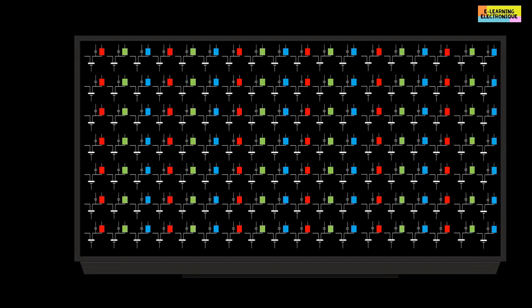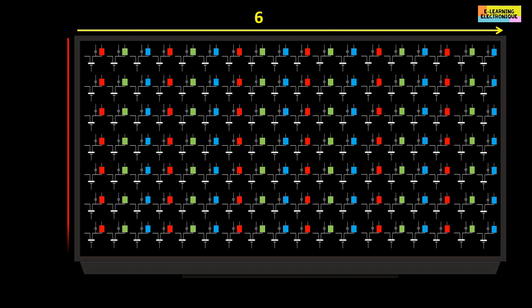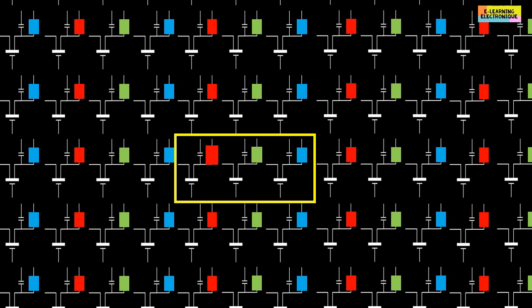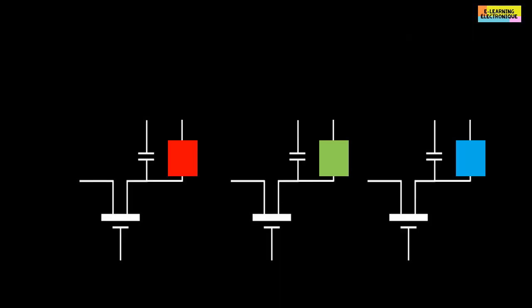Now we tackle the technical part to see how this large quantity of pixels works. On a simplified example screen containing very few pixels — six by seven gives a display resolution of 42 pixels — each pixel is represented by three sub-pixels, each dedicated to a color: one for red, one for green, and one for blue. In total, this screen has 42 pixels × 3, giving a total of 126 sub-pixels.